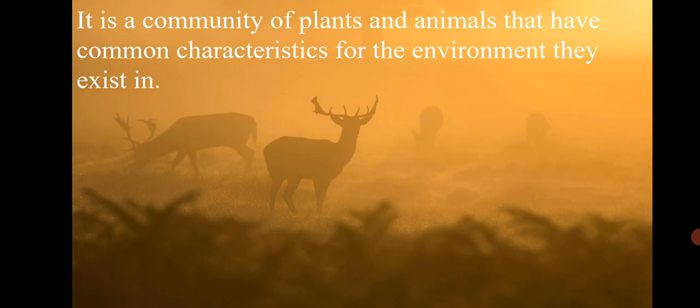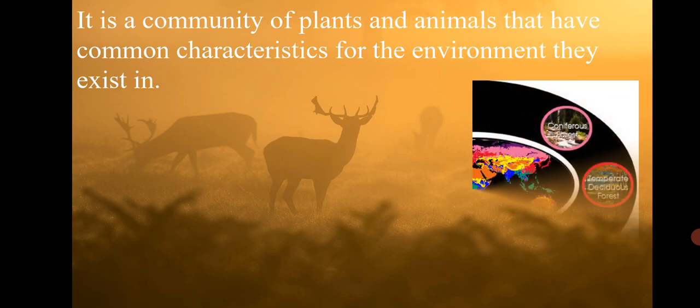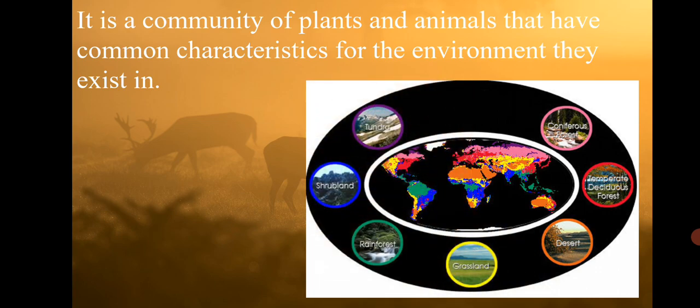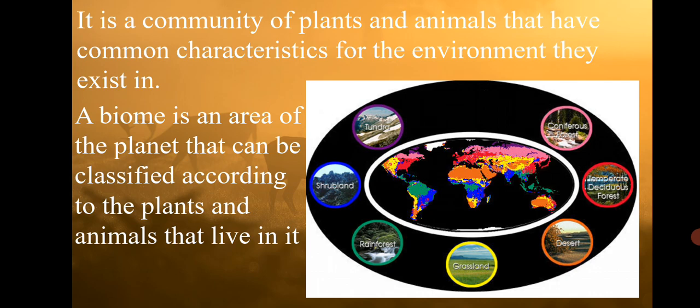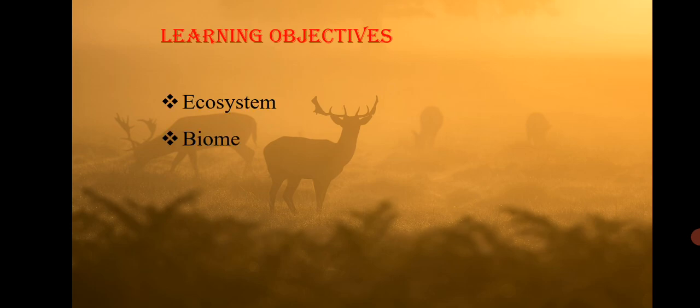Biome is a community of plants and animals that have common characteristics for the environment they exist in. In each biome, a particular type of natural vegetation gives rise to a particular type of wildlife. Biome is a large area of the planet that can be classified according to the plants and animals that live in it. I hope I could cover ecosystem and biome in this video — stay connected.